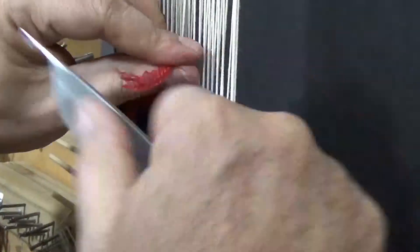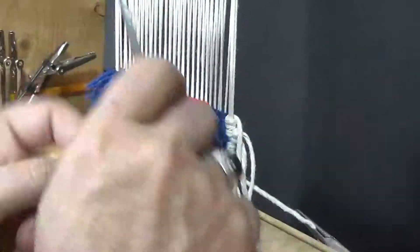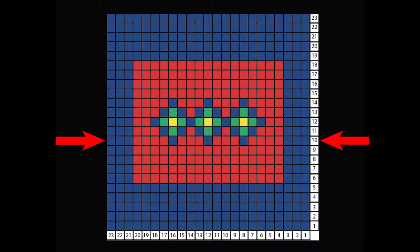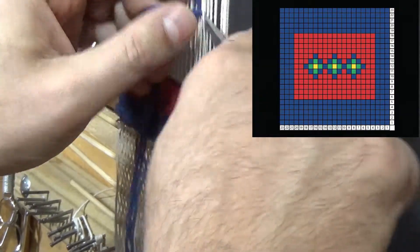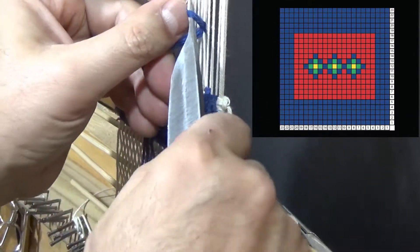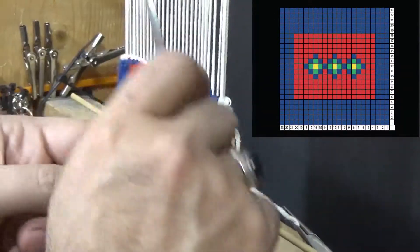After weaving four rows with red, we will need to add more colors. We will count the knots accordingly each time and add the knots in appropriate areas.